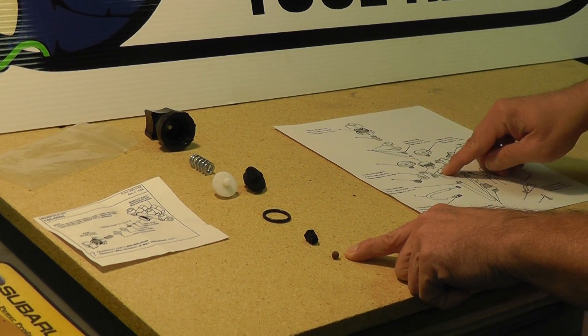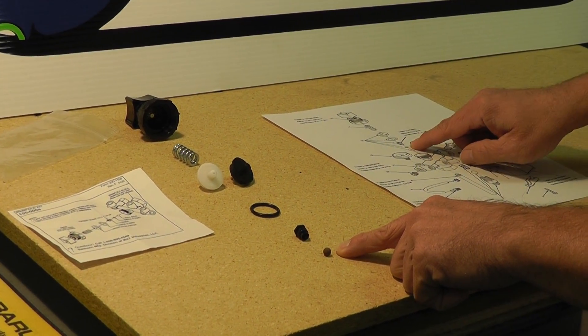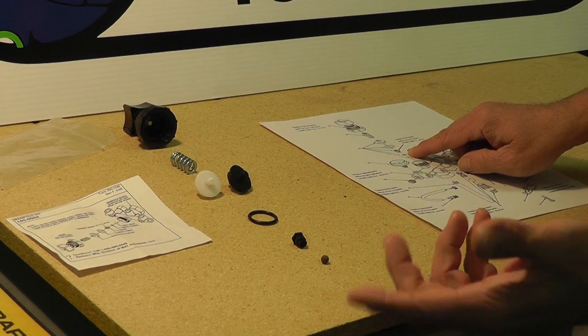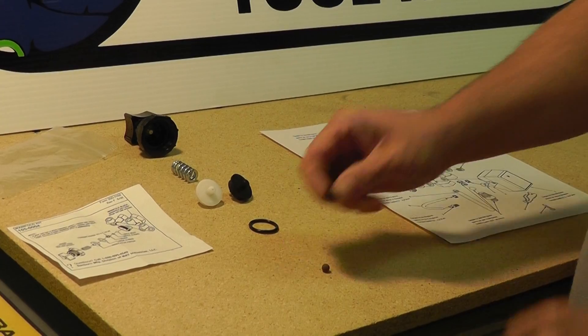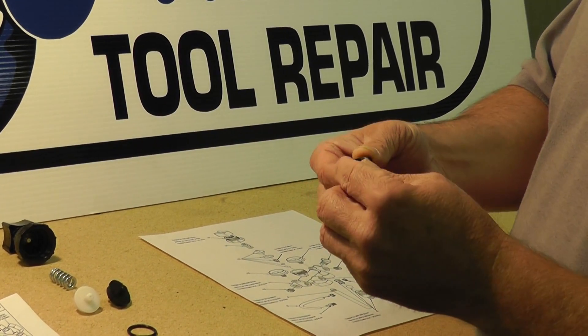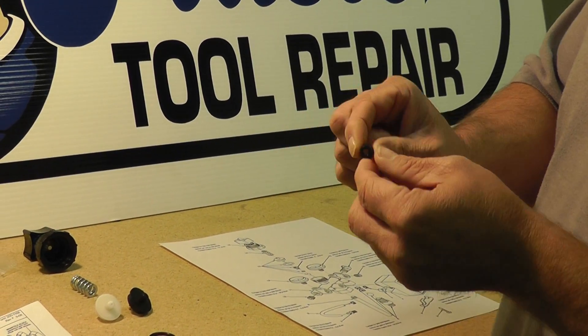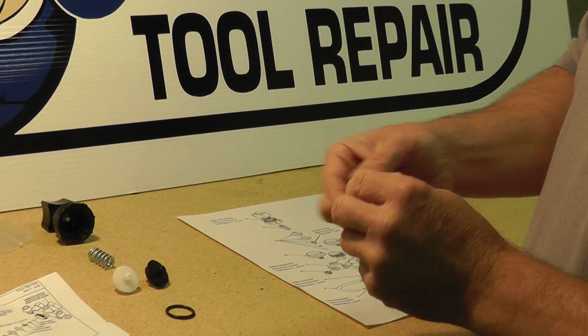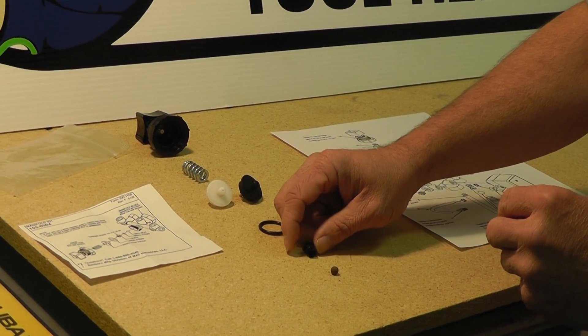The ball is going to go in first. It drops down into the manifold first. The next part that you see in the diagram, and this I think is where people are getting confused, is a small O-ring. Well, the small O-ring, because it kept getting lost, Sanborn started putting the O-ring directly onto the guide here so it doesn't get lost. So don't worry if you don't see the small O-ring, it's already pre-installed, okay?